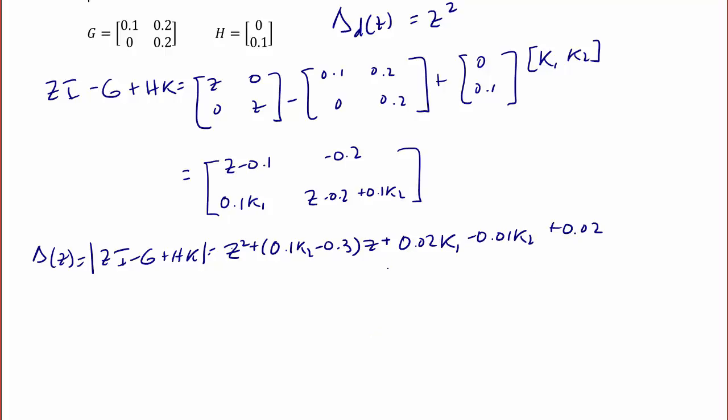Just like before, the first thing we do is equate coefficients. We're going to have 0.1 K2 minus 0.3 equals 0, so K2 is equal to 3.